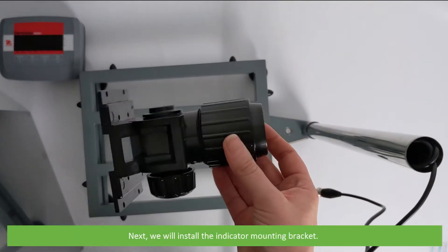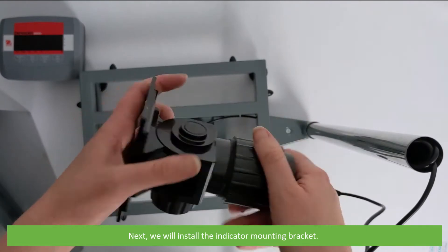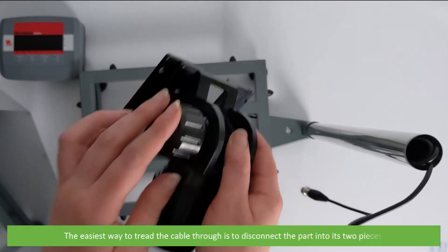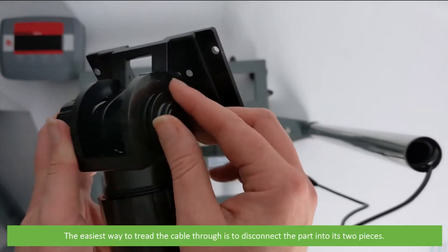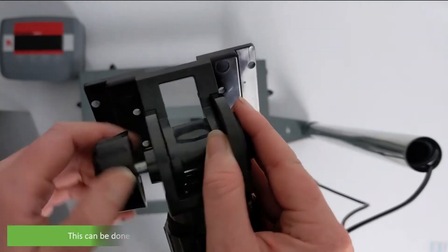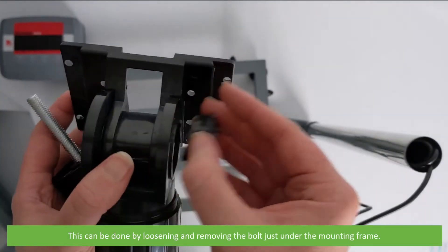Next, we'll install the indicator mounting bracket. The easiest way to thread the cable through is to disconnect this part into its two pieces. This can be done by loosening and removing the bolt just under the mounting frame.